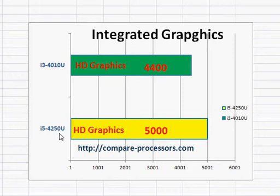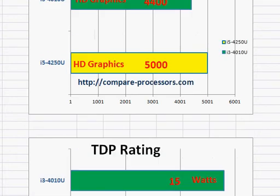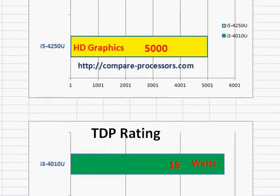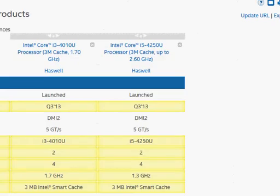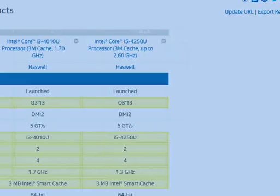Apple loves that graphics performance, and that's why it has used the i5-4250U in most of its notebooks. In terms of TDP rating, both processors are the same — both are rated at 15 watts.